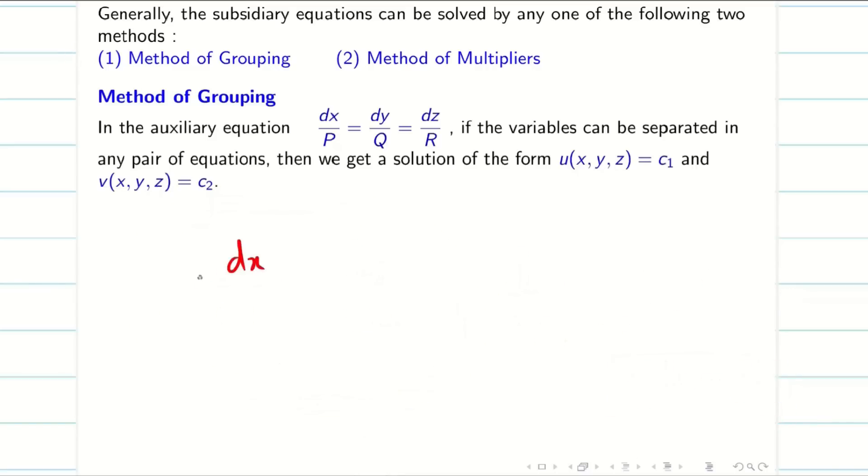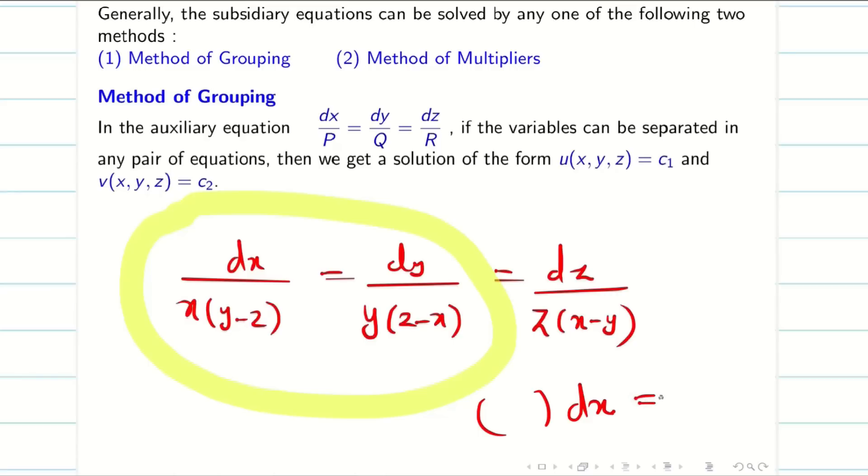But suppose the situation is dx/[x(y-z)] = dy/[y(z-x)] = dz/[z(x-y)]. If you take any two equations, I cannot split dx into terms of x equal to dy into terms of y. In this situation, method of grouping fails. Then we move to method of multipliers.